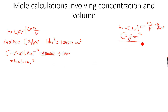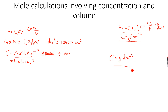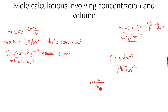We can convert this concentration back to mole per dm³, which is the more common unit we use for concentration. To do this, we know the concentration is in gram per dm³. When we divide this concentration by the Mr or Ar, we get the number of moles, since n is equal to m over Mr or Ar.